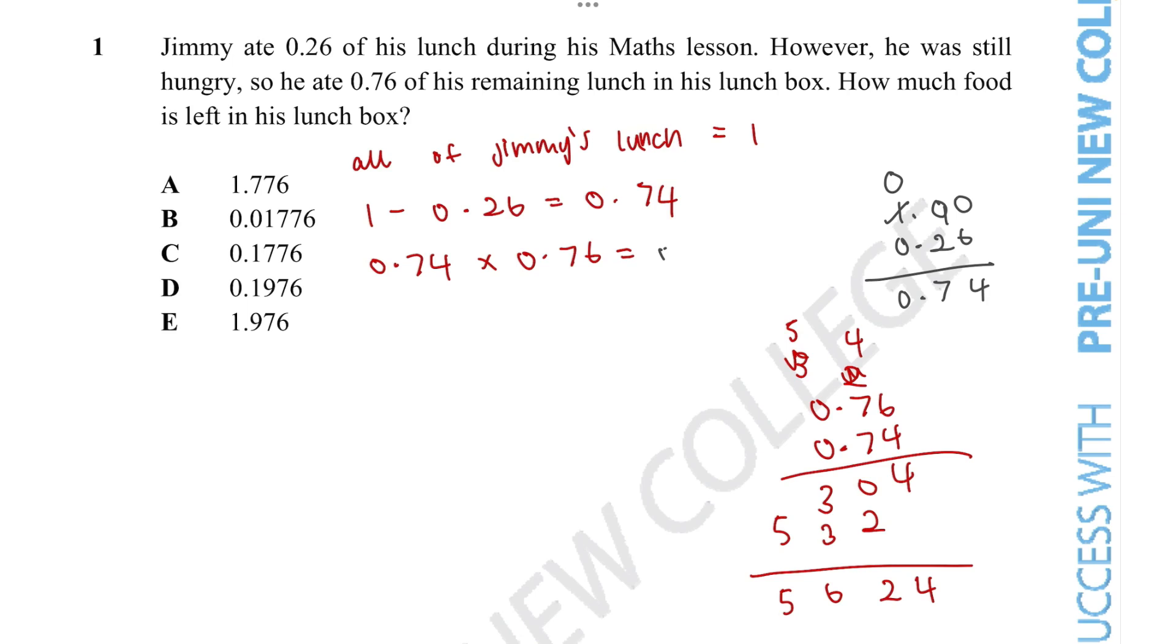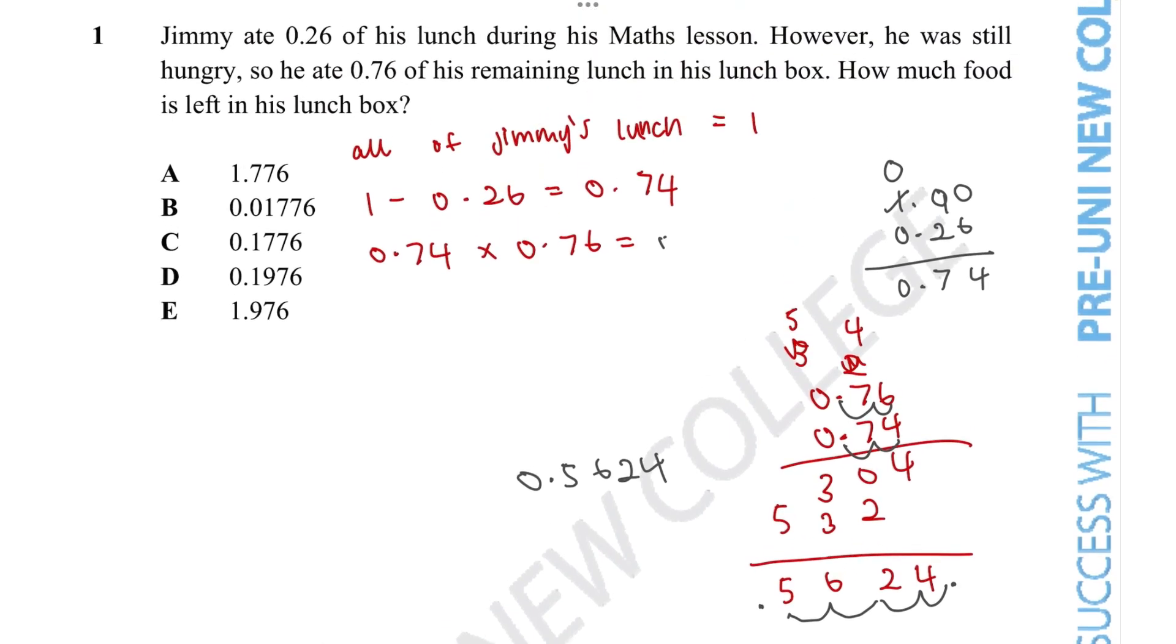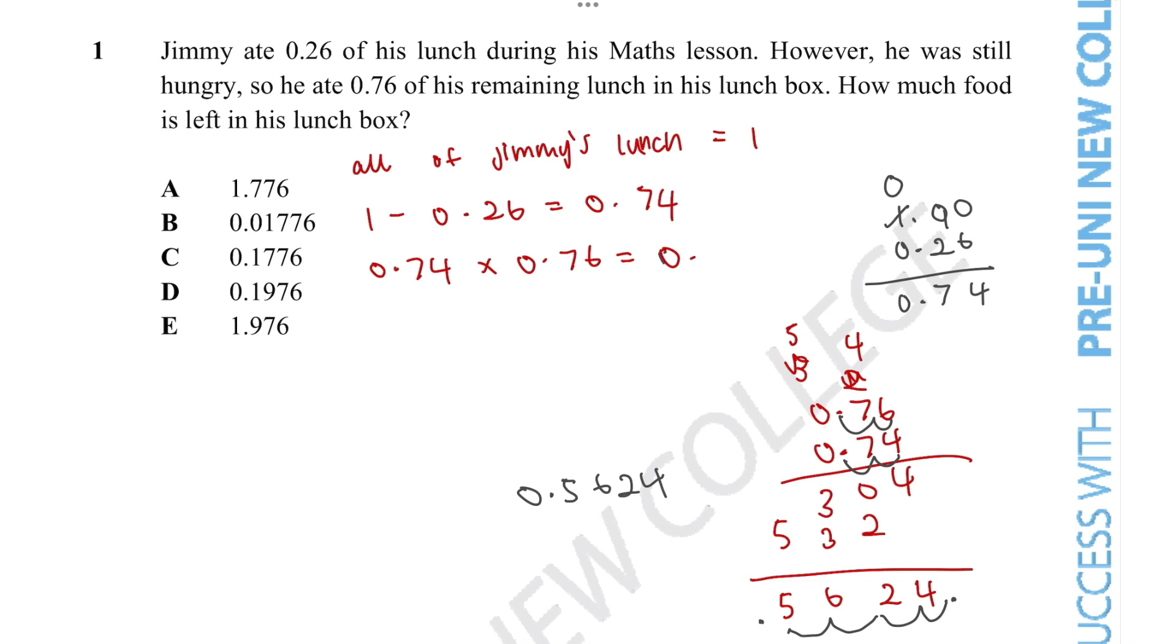Now we need to note that there are two decimal points here and two decimal points here. So we need to adjust the decimal points for these decimals. So if the point is here, we move it 1, 2 for the first one, and another 2 for the next one. So then the answer would be 0.5624. And now we can write it here. 0.5624.